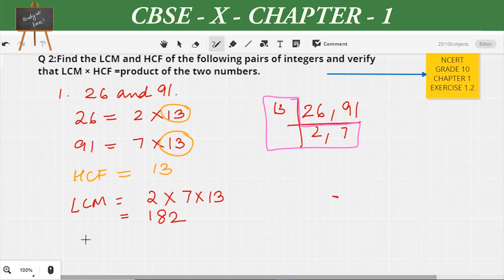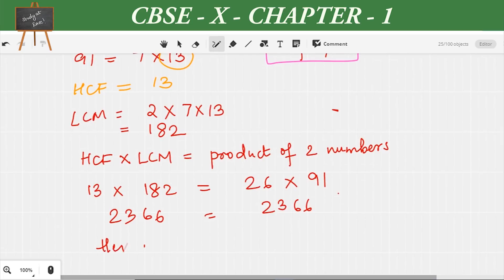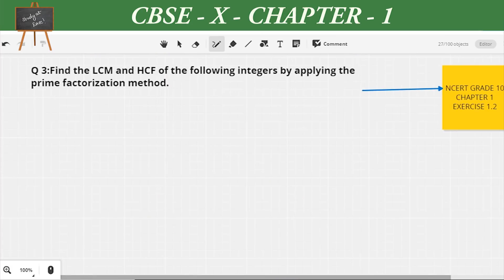According to the question, after finding the LCM and HCF we have to verify that HCF × LCM equals the product of 2 numbers. That is 13 × 182 = 26 × 91. 13 × 182 = 2366, similarly 26 × 91 = 2366. Hence we have verified.